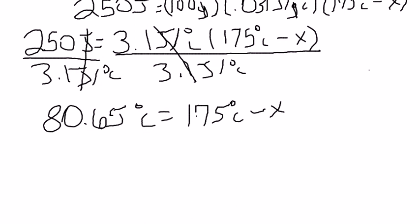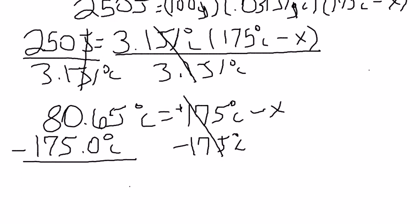Now, this next step can get confusing, so please try to follow as closely as you can. Since we have this imaginary plus sign here in front of this 175, and we need to do the inverse, we need to subtract 175 degrees Celsius from both sides. Sorry about the writing, this pen is killing me. Minus 175 degrees Celsius. So, since we have 80.65 minus 175, when you subtract these numbers, you're going to get negative 255.65 degrees Celsius is equal to negative X.